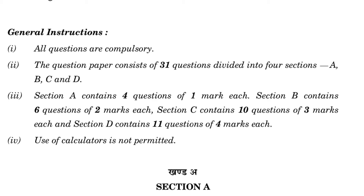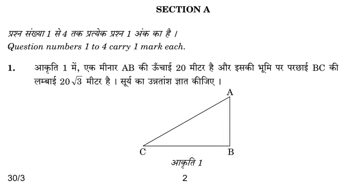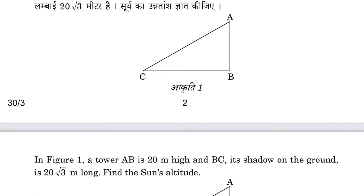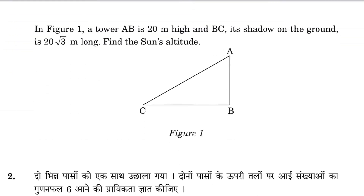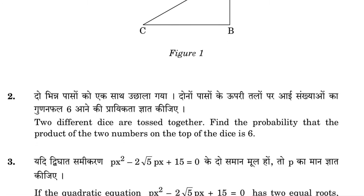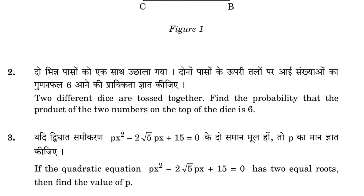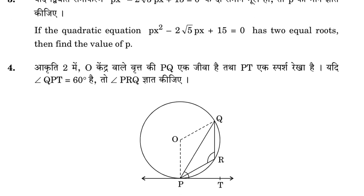In Section A, the first question is on trigonometry, the second question is on probability, the third question is on quadratic equations, and the fourth question is on tangents.